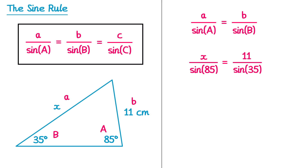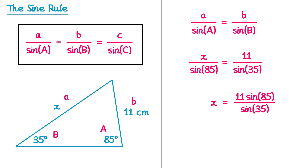The left side says X divided by sine 85, so we multiply both sides by sine 85. This cancels on the left, leaving just X. On the right we have 11 over sine 35 multiplied by sine 85, which can be written as 11 sine 85 over sine 35. Typing this into a calculator gives X equal to 19.104... Rounding to one decimal place, X equals 19.1 centimetres.